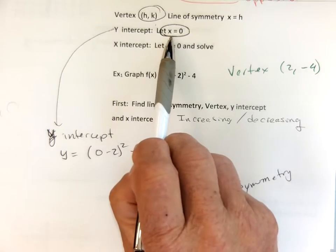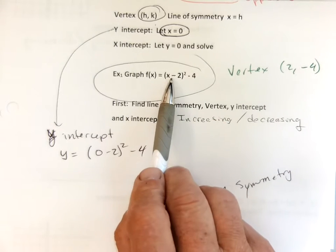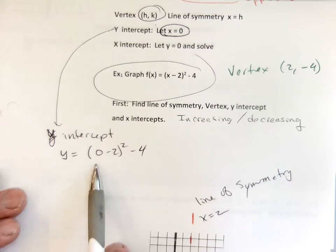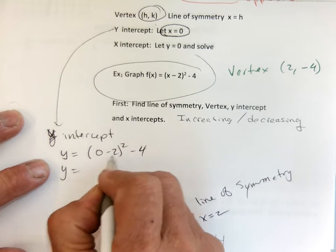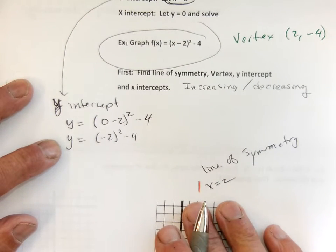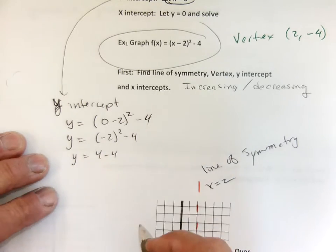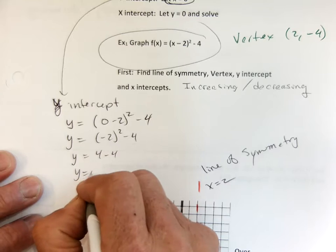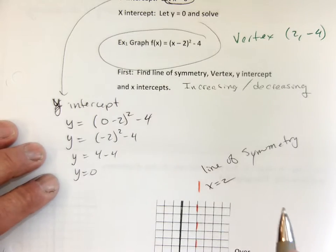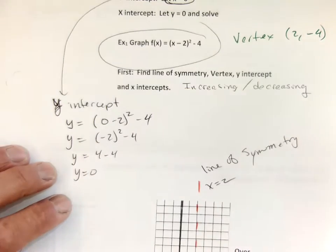My notes say let x equal 0, so I put 0 in for x. That 0 minus 2 is negative 2. A negative times a negative is a positive, so I get positive 4 minus 4. I get 0. So my y-intercept is at 0, 0.